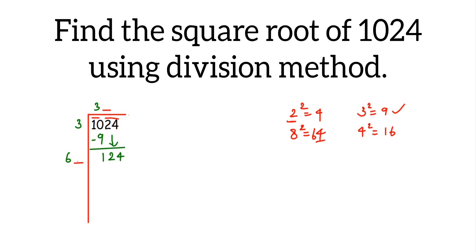So 62 times 2. So 2 times 2 is 4, 2 times 6 is 12. So we got 124 which we wanted, right? Which means here we'll get 2. So 62 times 2 is 124.